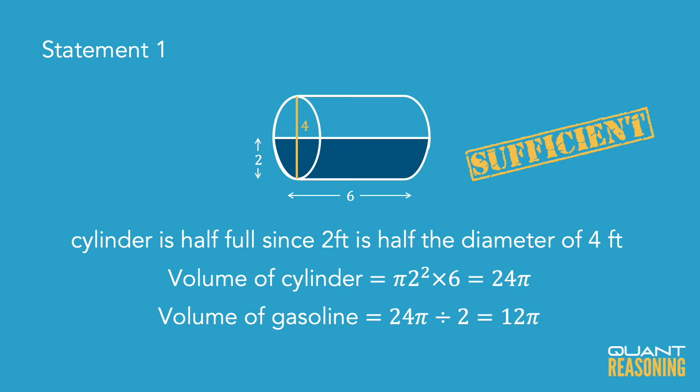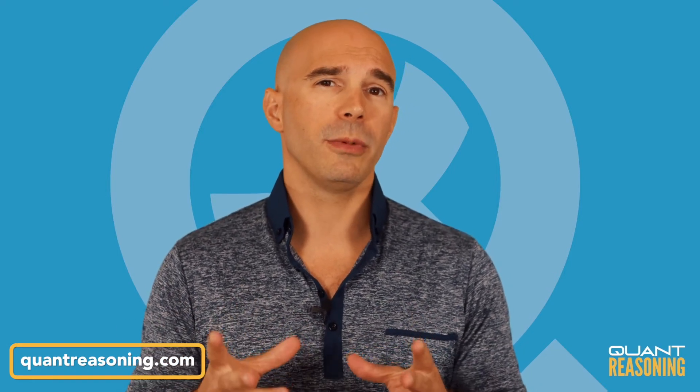And the gasoline is half of that, so 12 pi. So suffice it to say statement one is sufficient on its own. And if you know what it takes in order to find the volume of a cylinder and if you make the observation that the gasoline is exactly half of the volume of the cylinder, then you can see that statement one is sufficient on its own.